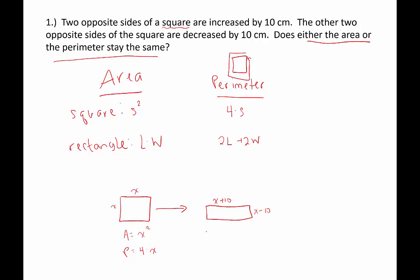What about the rectangle? The area would be the length (x plus 10) times the width (x minus 10). Using the distributive property, that gives x squared minus 10x plus 10x minus 100. Those middle terms cancel, leaving x squared minus 100. These are not the same as x squared, so the area did not stay the same.